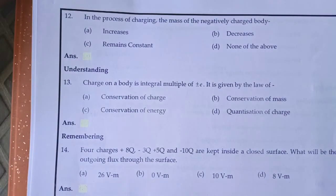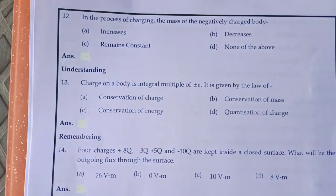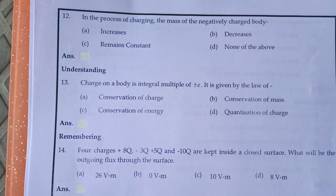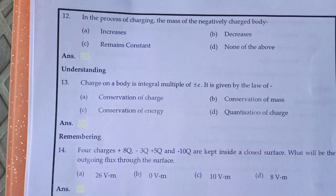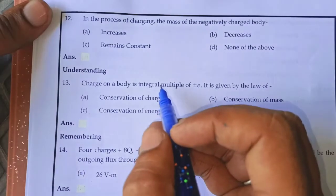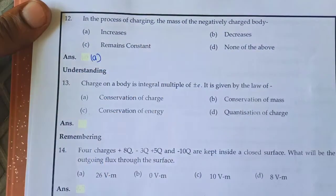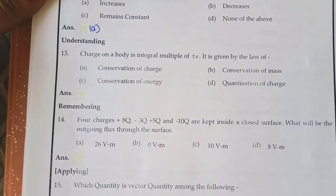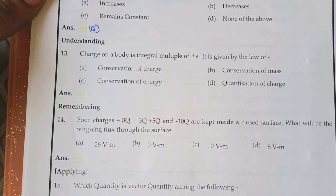In the process of charging, the mass of the negatively charged body: charging a body means adding or removing electrons. To give negative charge, electrons must be added; to give positive charge, electrons must be removed. Since electrons carry mass, adding electrons (negatively charging) increases the mass. Answer: option A — mass increases.